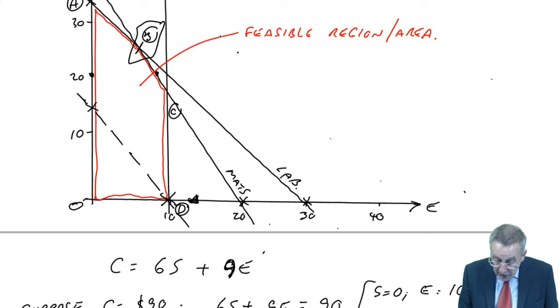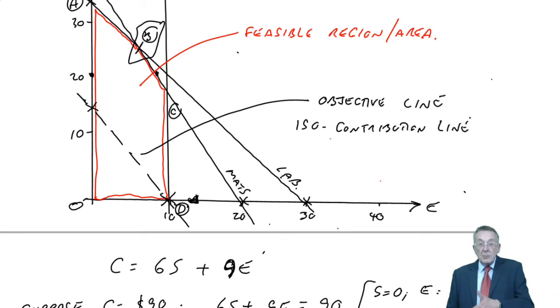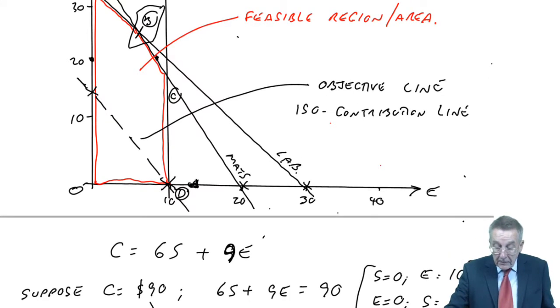And just the terminology, that was our objective line or another name for it is the ISO contribution line. ISO meaning same, so anywhere along it is the same contribution.